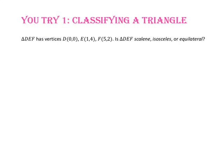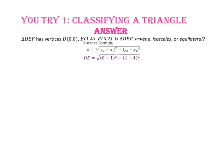Pause the video and do you-try number 1. Triangle DEF has vertices D at (0, 0), E at (1, 4), and F at (5, 2). Is triangle DEF scalene, isosceles, or equilateral? Let's start by using the distance formula. To find the length of segment DE, the length equals the square root of (0 minus 1) squared plus (1 minus 4) squared. 0 minus 1 is negative 1, and 1 minus 4 is negative 3. Negative 1 squared is 1, and negative 3 squared is 9. 1 plus 9 is 10, and the square root of 10 is approximately 3.2.